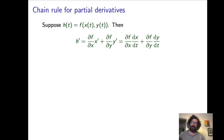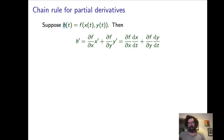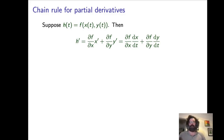One of the topics we cover in the second week is an application of partial derivatives: the chain rule for partial derivatives. What we're thinking here is we have a function H, which is given as a composition of a function F, which depends on two variables labeled X and Y. Each of those variables depends on some third variable T. So H is a function of T, created as a composition: F is a function of two variables, and each of those variables is a function of another variable T.